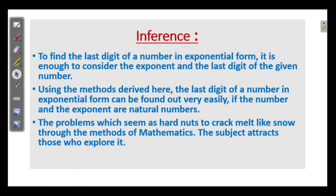Inference. To find the last digit of a number in exponential form, it is enough to consider the exponent and the last digit of the given number. Using the methods derived here, the last digit of a number in exponential form can be found out very easily if the number and the exponent are natural numbers. The problems which seem as hard nuts to crack melt like snow through the methods of mathematics. The subject attracts those who explore it.